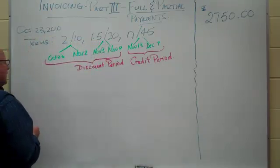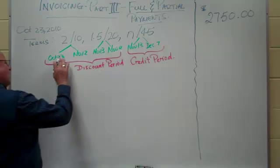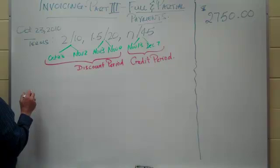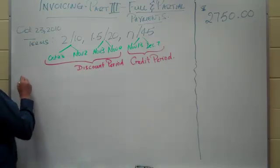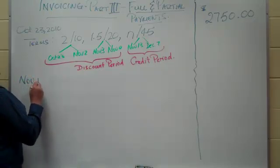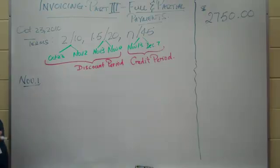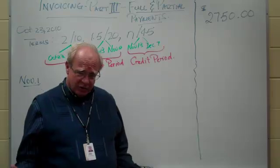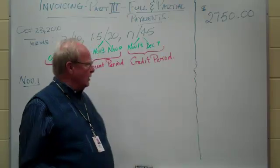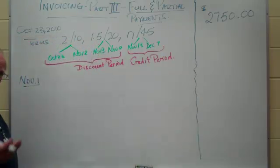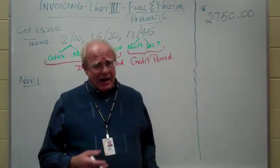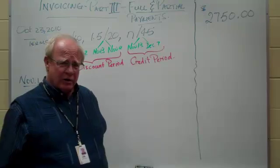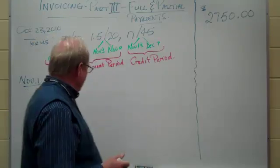Alright. Let's try this. What if first of all a payment is made somewhere in the first discount period? Let's assume they make the payment on November the 1st. So on November the 1st, a bookkeeper or someone in the company alerts us and says we better make a payment now because this is the end of the first discount period or very close to it. We say okay, how much do we owe? We owe $2,750. How much can we afford to send them?